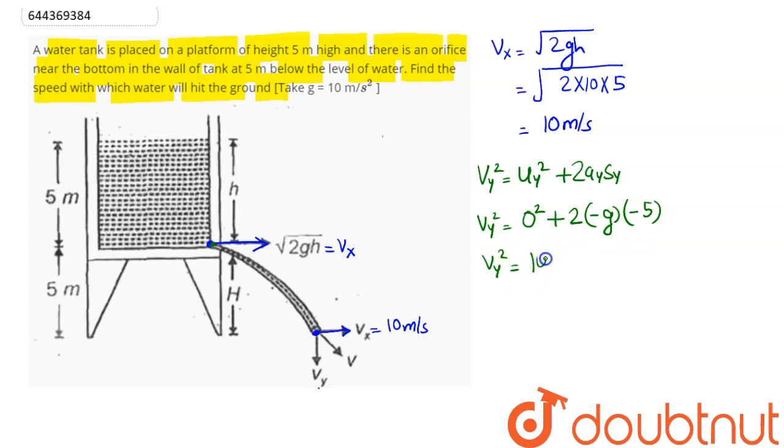which comes out to be 100. Hence, vy comes out to be 10 meters per second.